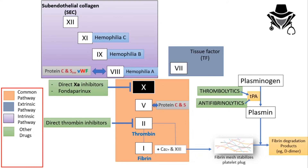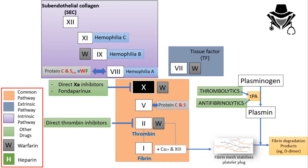Now let's finish by explaining two very important drugs: warfarin and heparin. Warfarin affects vitamin K-dependent coagulation factors — specifically factors 9, 7, 10, and 2. Heparin acts on antithrombin inhibitors and ultimately affects coagulation factors 12, 11, 10, 9, and 2.